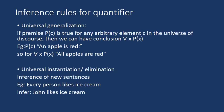Now let us come to the point. We will see inference rules for quantifier. So basically there are four types of rules. The first one is universal generalization, which says if premise P(c) is true for any arbitrary element c in the universe of discourse, then we can have conclusion for all x, P(x).